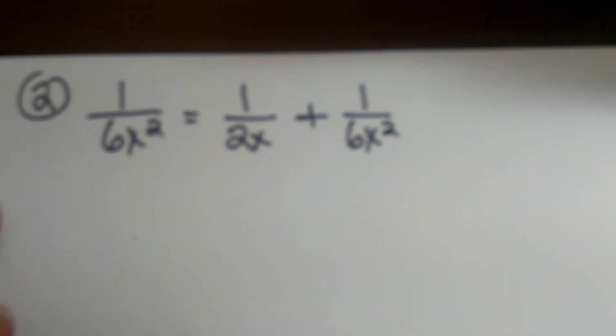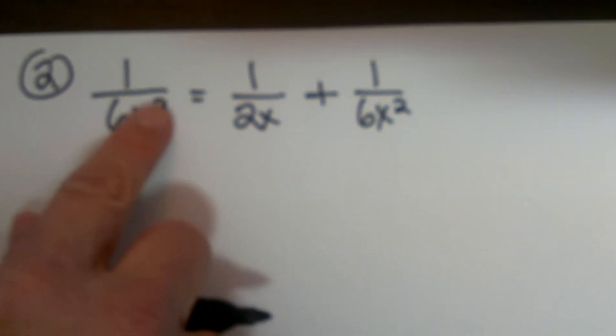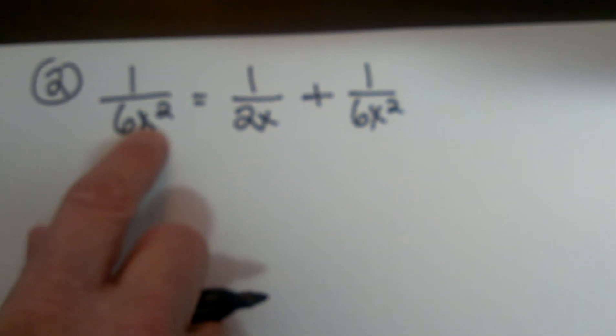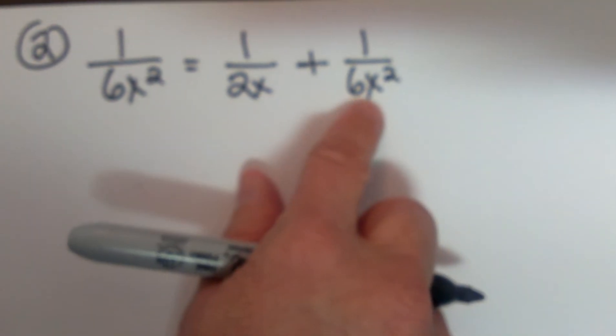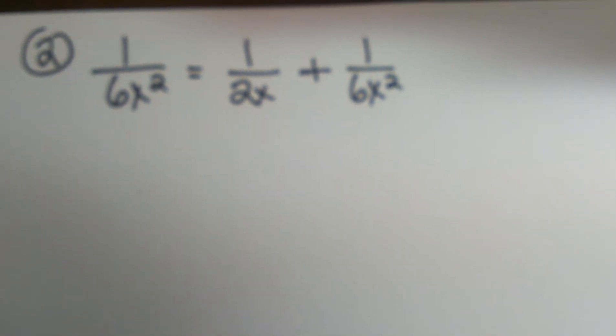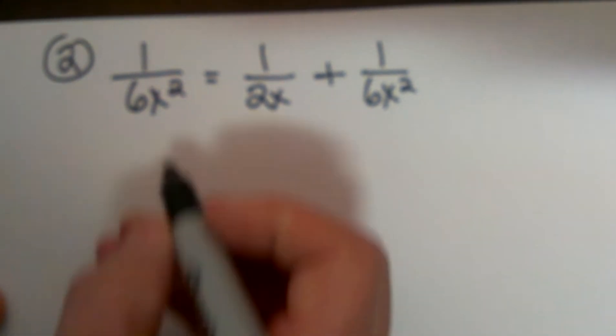So let's look at one that may have a little bit fancier denominator. This time we have 6x squared, 2x, and a 6x squared as our denominators. Let's see what we can do to clean this one up.